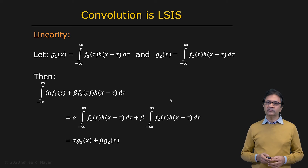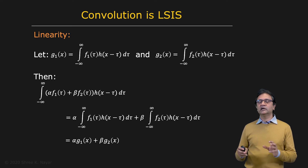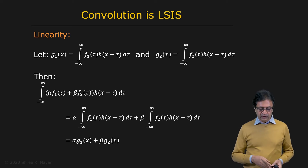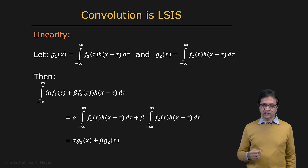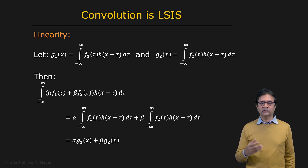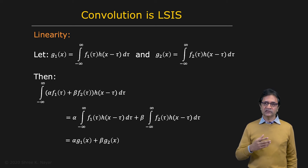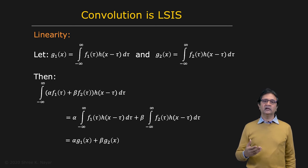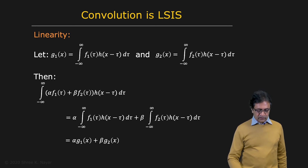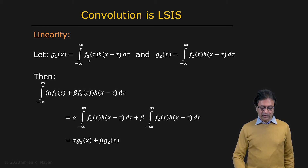I said before that convolution implies linear shift invariance. So let's take a look at why that is the case. What we need to show is that when you perform a convolution, the result is a function which satisfies linearity and shift invariance. So let's say that you have a function f1 convolved with h — you get an output g1. You have another function f2 convolved with h, which gives you g2.